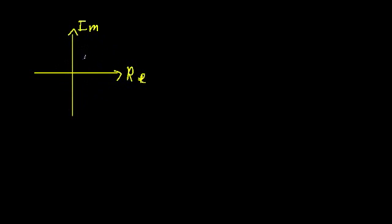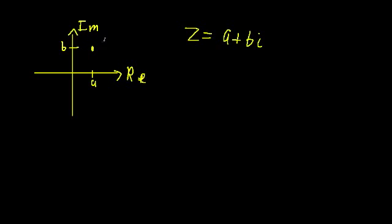The idea is we can plot all complex numbers on this plane — every complex number is represented by a point. You plot the real part of the complex number along the real axis and the imaginary part along the imaginary axis. So if we have a general complex number z = a + bi, we go out distance a on the real axis and up distance b on the imaginary axis and plot our point. We can describe this complex number with the coordinates (a, b), where it's understood as real part comma imaginary part.